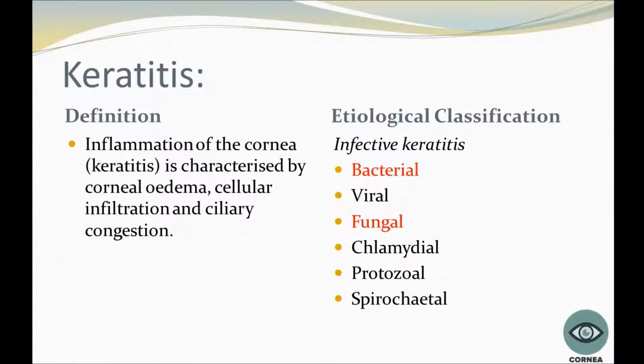Regarding etiology, there are two main factors in the production of a purulent ulcer: damage to the corneal epithelium and infection of the eroded area.